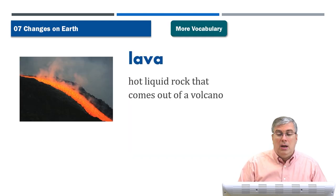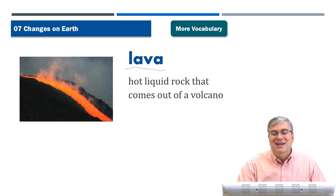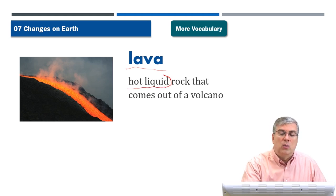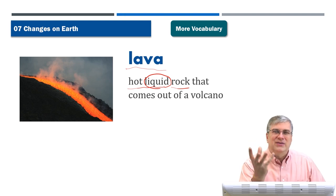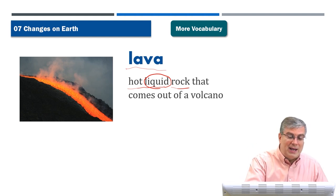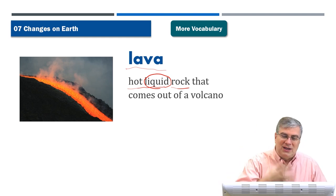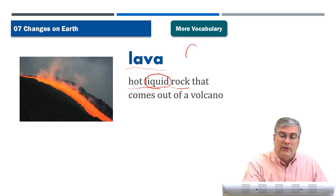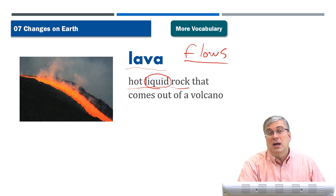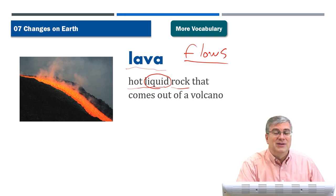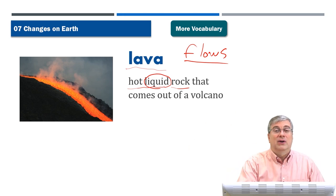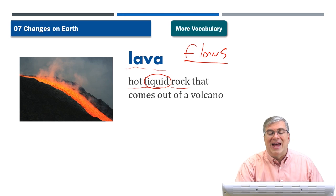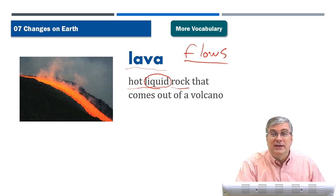'Lava' is hot liquid rock — rock that is in liquid form. It has to be really, really hot for rock to melt into a liquid. You can see lava is red with a lot of steam coming off it, because any moisture in the air turns to steam immediately on contact. You can watch lava flows in Hawaii — it's a tourist attraction. The lava flows go down to the ocean and create a lot of steam. Lava is hot liquid rock that comes out of a volcano.